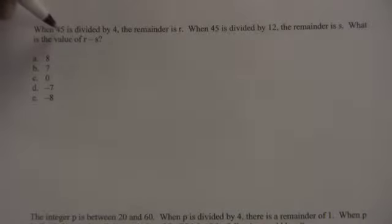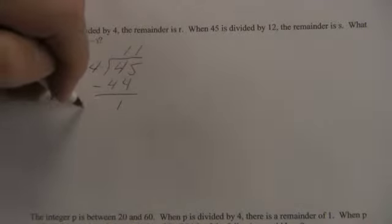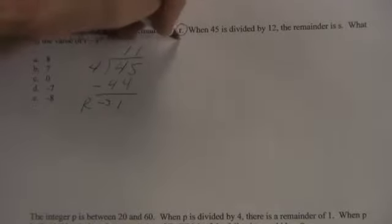The question tells us when 45 is divided by 4, the remainder is r. So we do 45 divided by 4. Now 4 goes into 45 11 times. 11 times 4 is 44, so there's 1 left over. We're getting a remainder of 1, and that tells us that r equals 1.